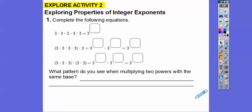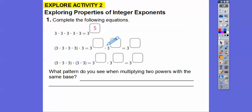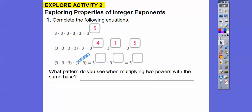Here we have 3 times 3 times 3 times 3 times 3 — that's 3 to the 5th. Now: 3 times 3 times 3 times 3 is 4 of them, so 3 to the 4th. And one more 3 is 3 to the 1st. So 4 and 1 together, that's 5 of them — giving us 3 to the 5th. We can also group them as 3 to the 3rd times 3 to the 2nd, which is also 3 to the 5th. The pattern: what do we see when multiplying two powers with the same base?